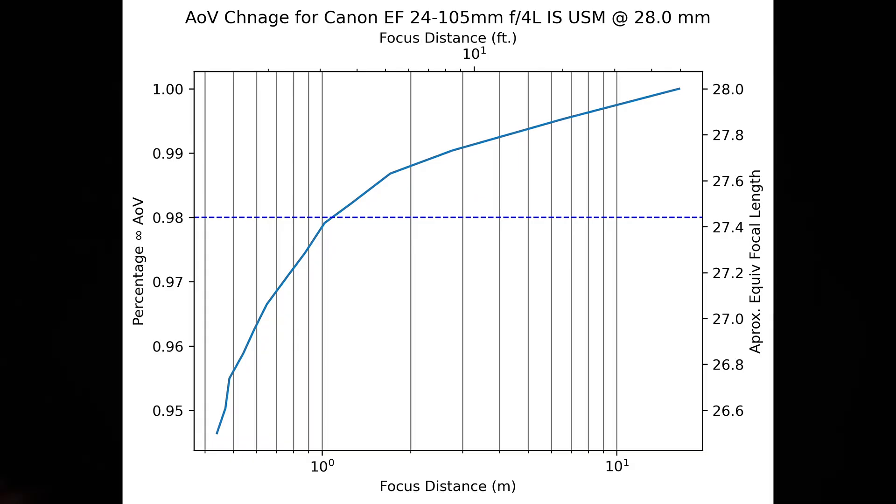Now, stepping up to the 28mm position, the total angle of view shift increases to about 5.3%, again, with the angle of view getting wider. Also, again, owing to the wide angle in view and the not horrific overall shift, the 2% threshold point happens at just over 39 inches or 1 meter from the camera.